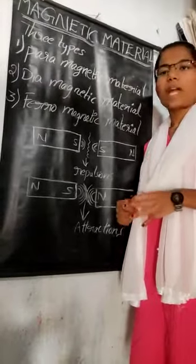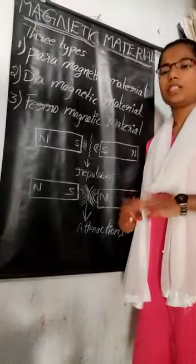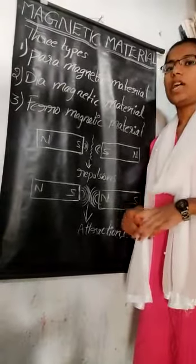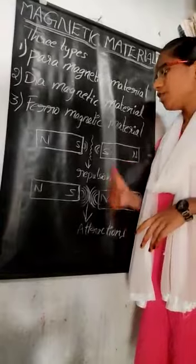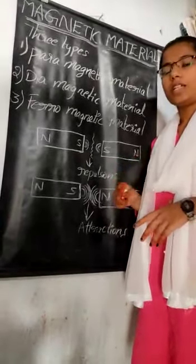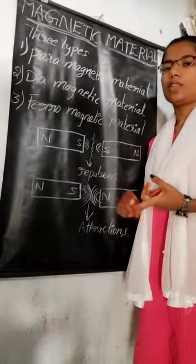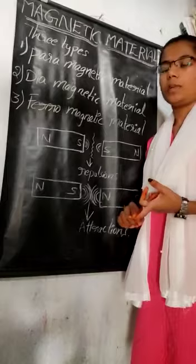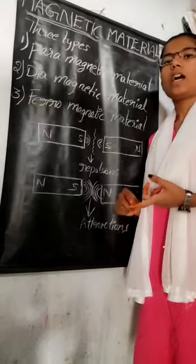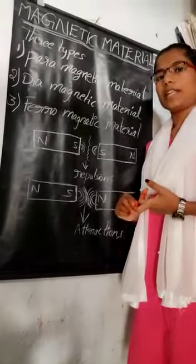Generally we know magnet means there is attraction and repulsion takes place. And also when we place two magnets near each other, the north pole and north pole, and the south pole and south pole repels. And the north-south attraction takes place.